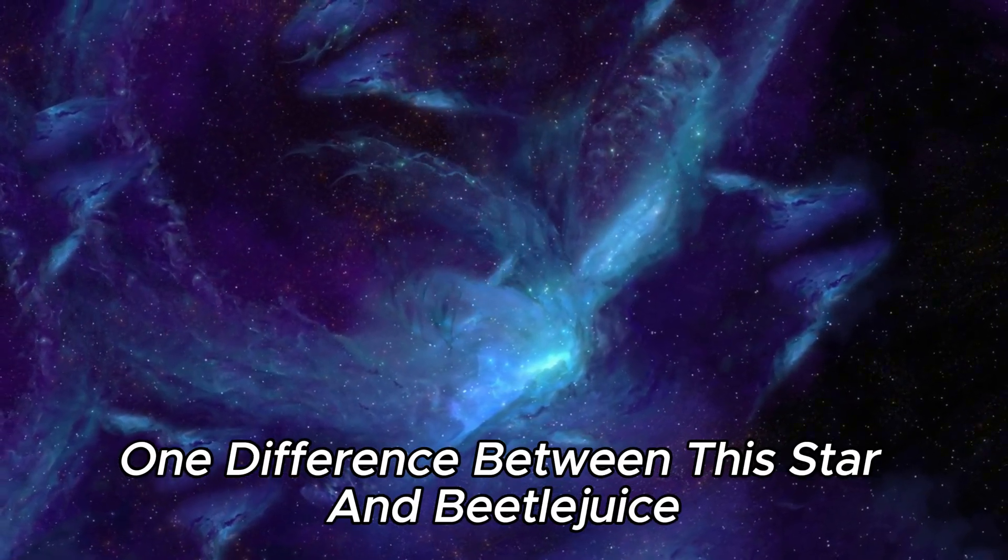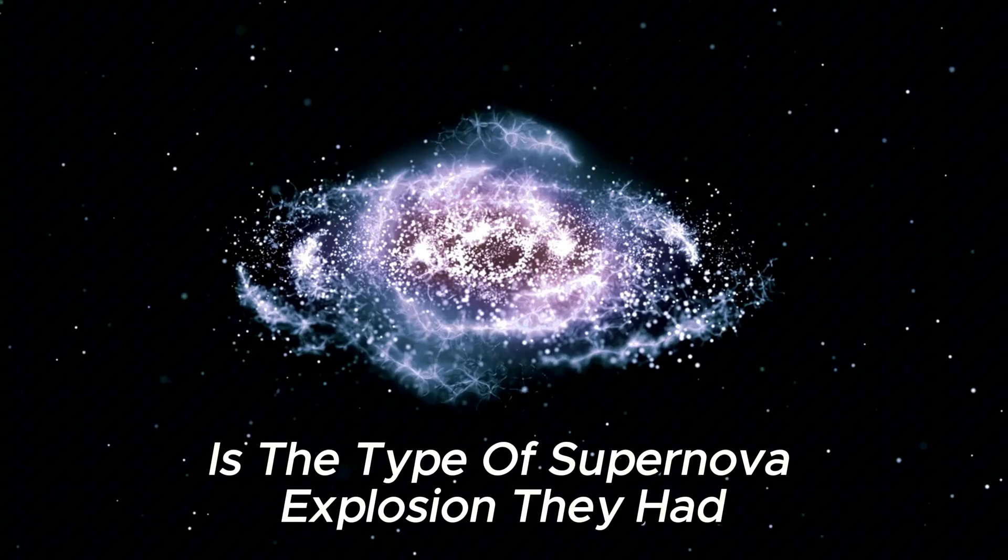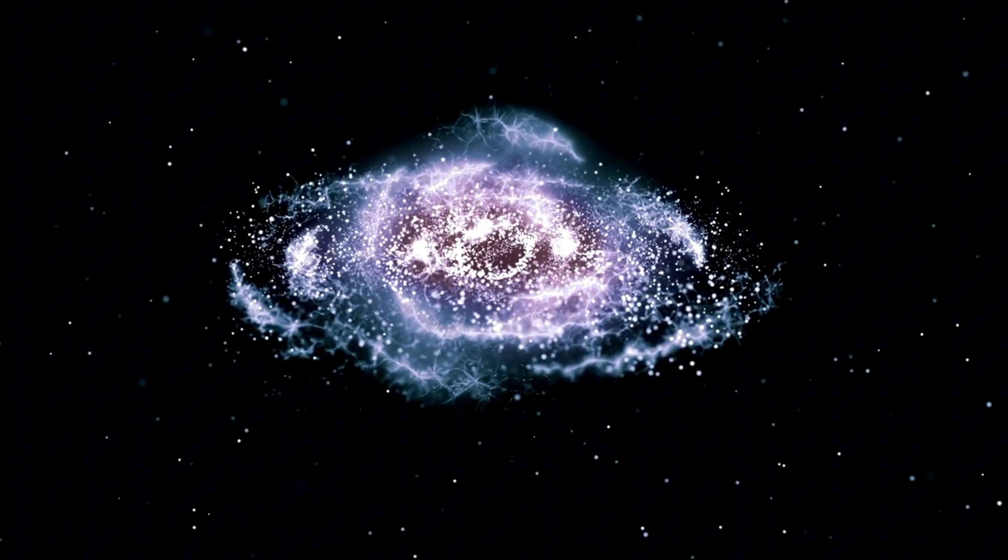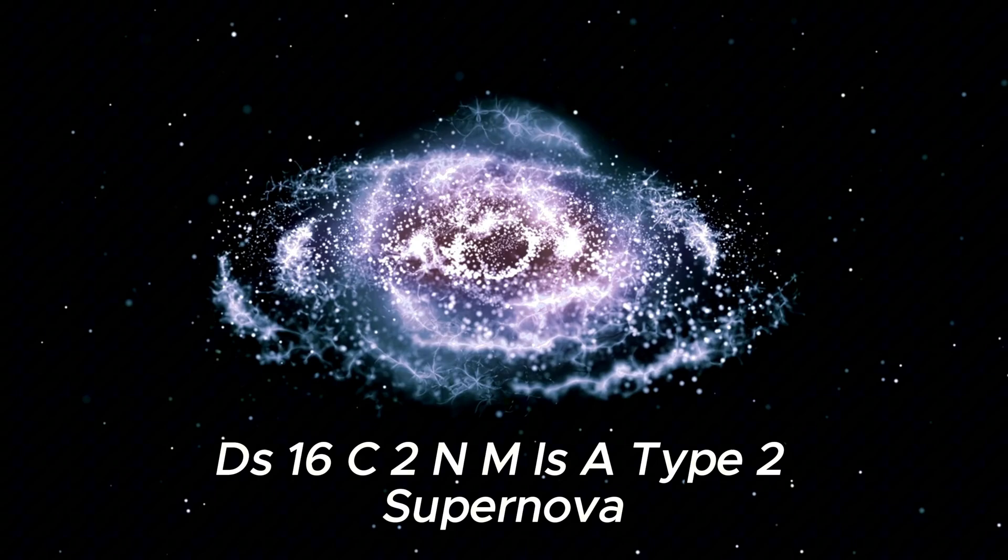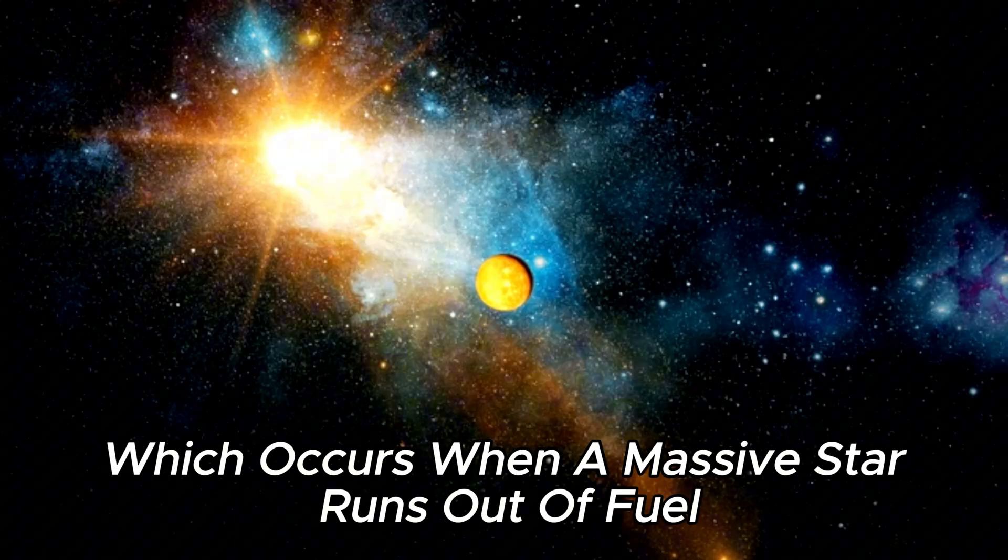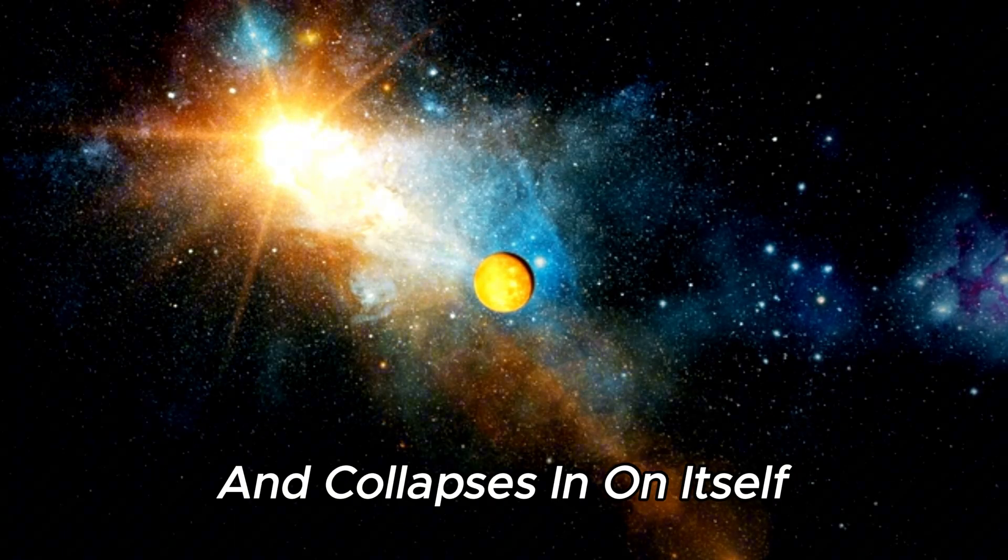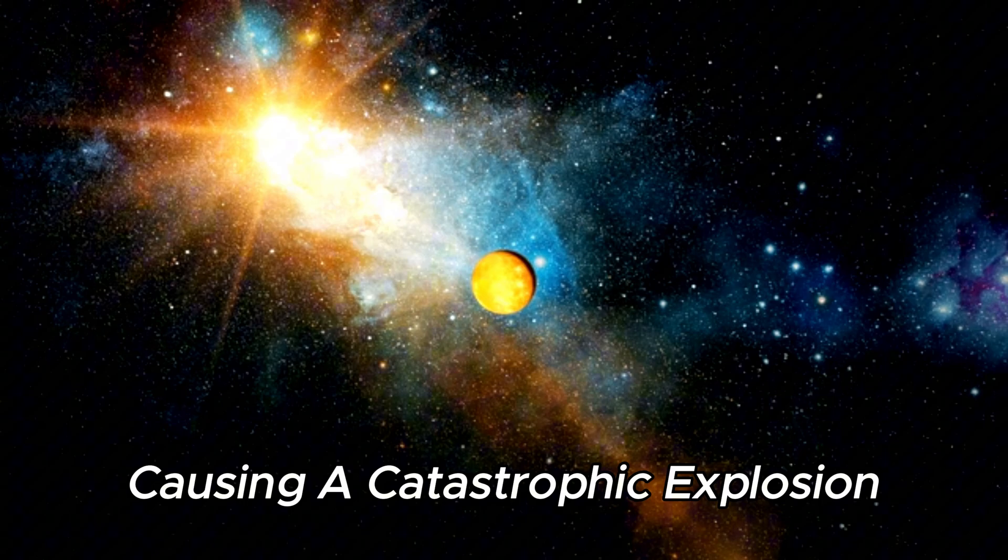One difference between this star and Betelgeuse is the type of supernova explosion they had. DES-16C2NM is a type 2 supernova, which occurs when a massive star runs out of fuel and collapses in on itself, causing a catastrophic explosion.